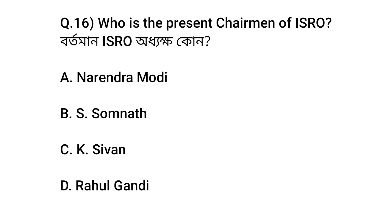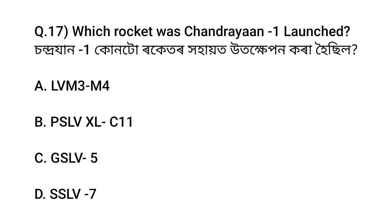Next question: Who is the present chairman of ISRO? Option no. B: S. Somnath. Next question: With which rocket was Chandrayaan 1 launched? Option no. B: PSLV-XL C11 was used to launch Chandrayaan 1.